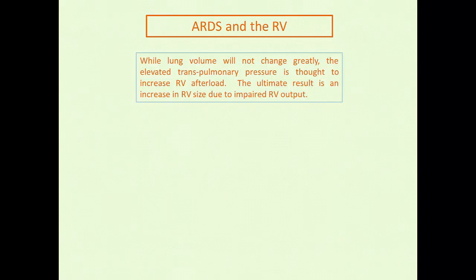In pulmonary ARDS, the abnormality is impaired pulmonary compliance. These patients primarily had direct toxic insults to the lungs — classically aspiration pneumonia or severe pneumonia blossoming into ARDS physiology — typified by consolidations that can't really be recruited. This results in very high transpulmonary pressures, as less of the airway pressure is transmitted to the pleural space. Lung volume will not change greatly, and the elevated transpulmonary pressure is thought to increase right ventricular afterload, as once transpulmonary pressure supersedes the transmural pressure of the pulmonary arterioles, the blood vessels collapse, increasing vascular resistance.